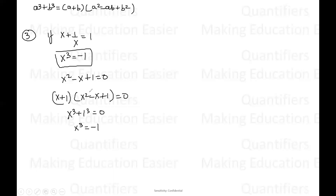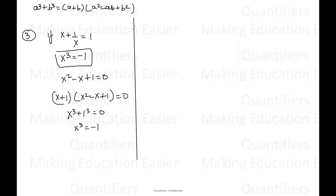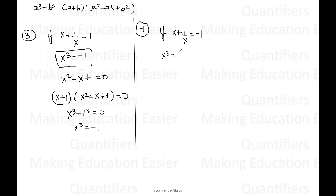Please remember this result — it can save a lot of time. Now let us see the fourth result, which is also very similar to the third one. The fourth result says if X plus one by X is equal to negative one, then X cubed will be equal to one.